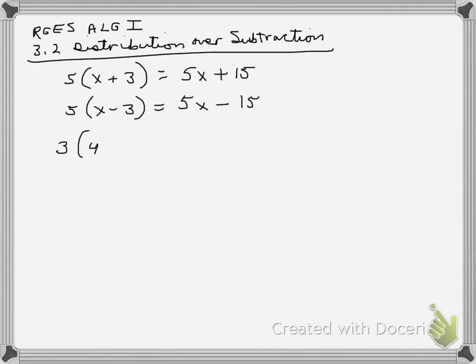If you're distributing 3 times the quantity 4x minus 2, recall what you do here. You say 3 times the first minus 3 times the second term. So 3 times the first term would be 12x minus 3 times the second term would be 6.